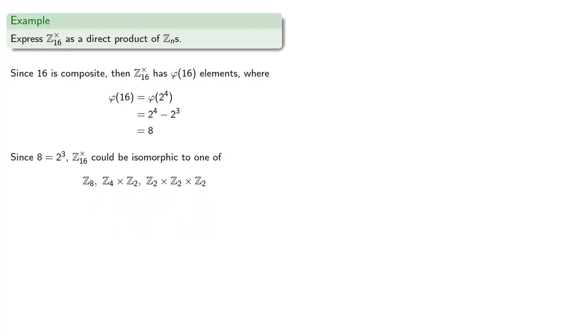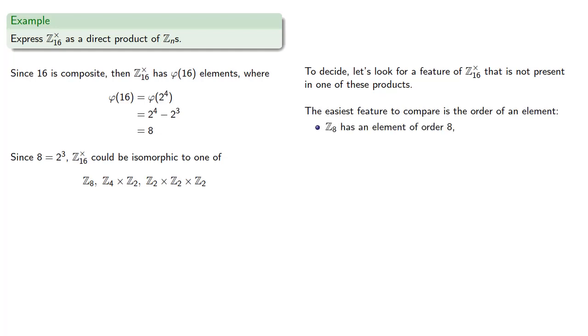So to decide, let's look for a feature of the integers mod 16 under multiplication that is not present in one of these products. And the easiest feature to compare is the order of an element. Z8 has an element of order 8. The highest possible order of an element in Z4 cross Z2 is 4. And every non-identity element in Z2 cross Z2 cross Z2 has order 2.